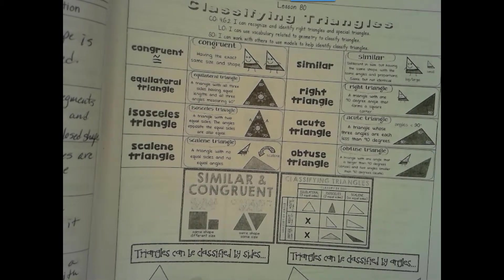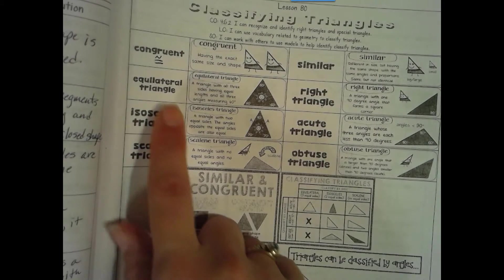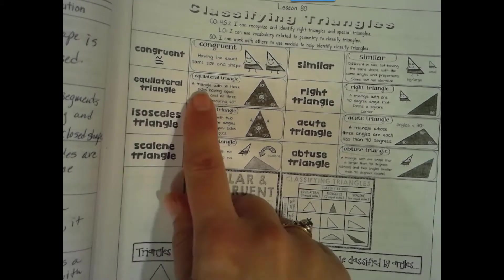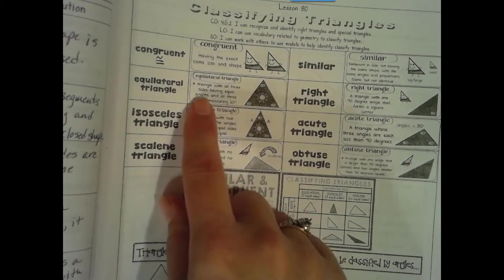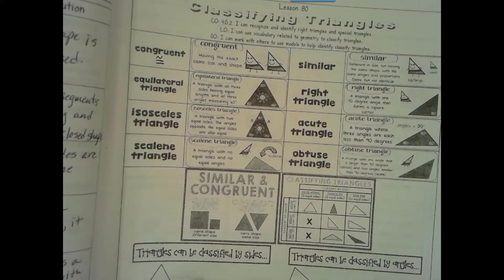Okay now getting into our terms for our triangle. Here all have to do with sides. Equilateral triangle: a triangle with all three sides having equal lengths and all three angles measuring 60 degrees.